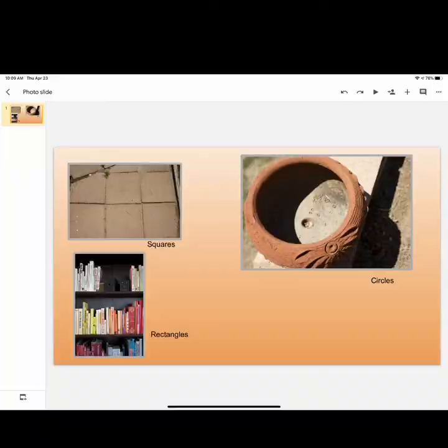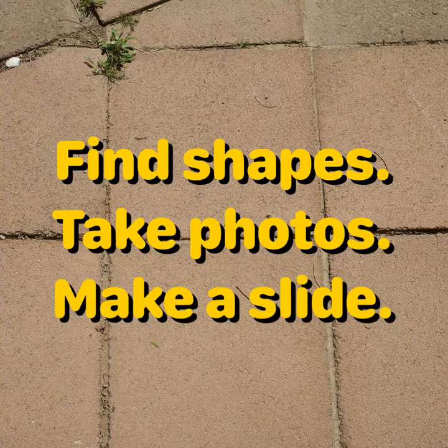What I want you to do is take your favorite images and arrange them onto a Google Slide like you see here, with the names of the shapes that you're using labeled under or next to each picture. Then you can submit this slide on Google Classroom. So you're going to find some shapes, you're going to take some photos, you're going to make a slide, and turn it in.